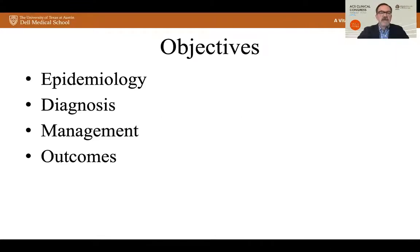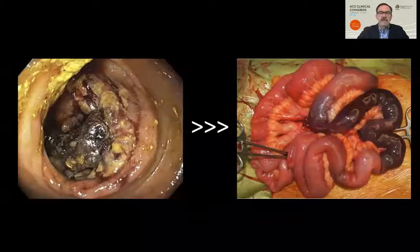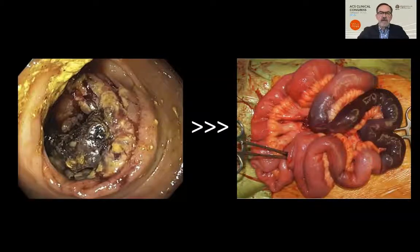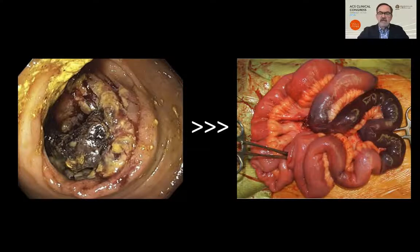Our objectives today are to cover the epidemiology, diagnosis, management, and outcomes for patients with ischemic colitis. Regarding epidemiology, it's important to understand that ischemic colitis is going to be far more common than small bowel mesenteric ischemia, and I'll spend much of this talk comparing and contrasting these two distinct disease processes.